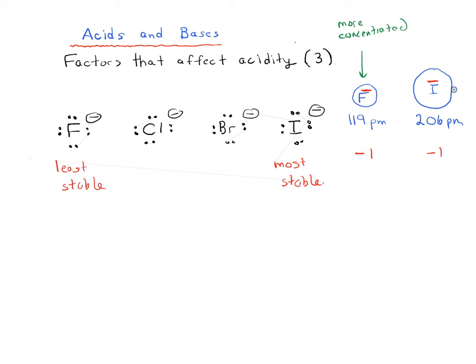And in general, you might see this in organic chemistry quite a bit. You see this trend where the more concentrated or the more isolated or localized a negative charge is, the less stable it's going to be. So high charge densities tend to be unstable.